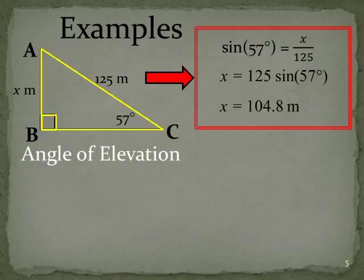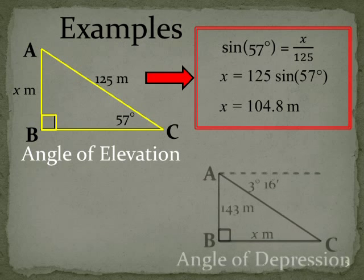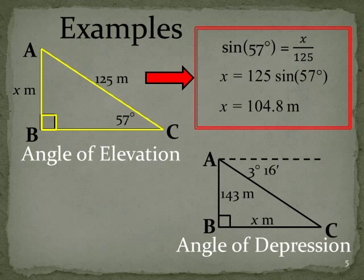Let's now look at one where we've been looking at the angle of depression. Here's our diagram. This one might be something like you're up a forestry tower looking out for bushfires. You spot some smoke, 3 degrees 16 minutes as the angle of depression, and you want to find out how far away the fire is.